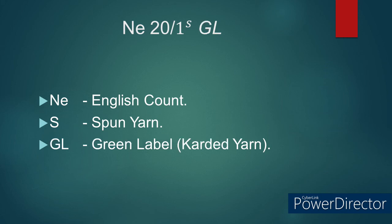Number 10: NE 20/1S GL. Here NE refers to English count. S refers to spun yarn. GL refers to green label, meaning carded yarn — that is, the yarn doesn't undergo any combing preparatory process during its yarn manufacturing process.